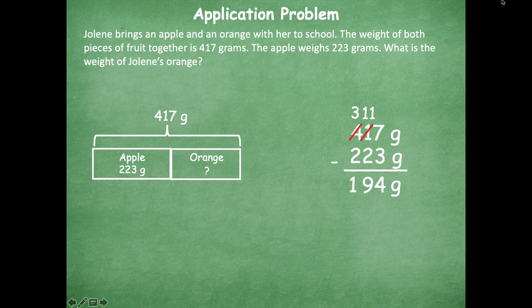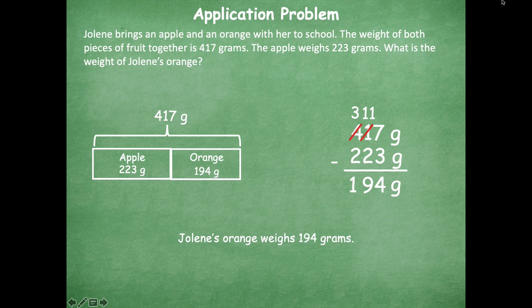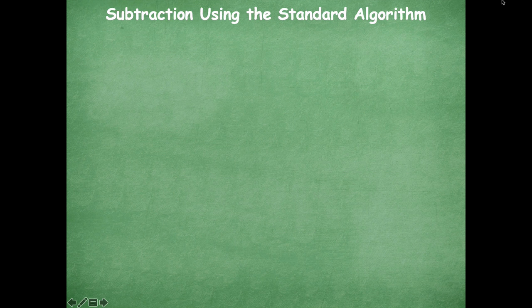So 194 grams is how much the orange weighs — Jolene's orange weighs 194 grams. Notice how we are solving the problem: we're reading the problem, drawing a tape diagram to help us, solving the problem, and then writing our answer in a sentence. That's the RDW process, friends. Make sure that you guys are doing that as you're working as well.